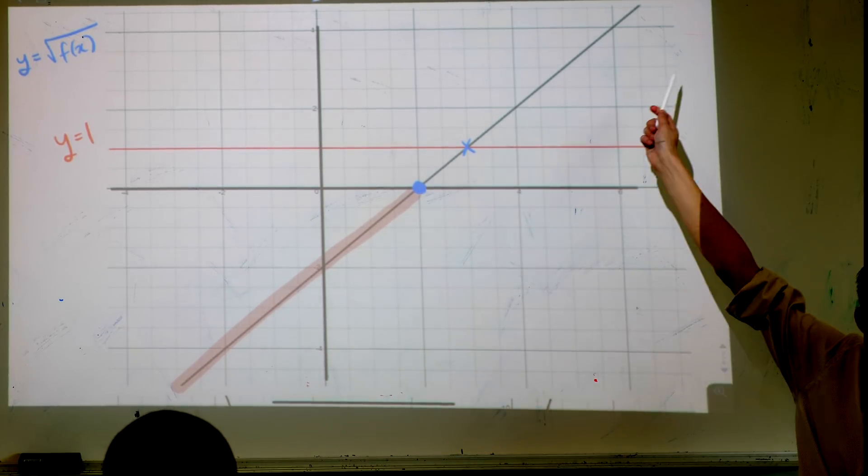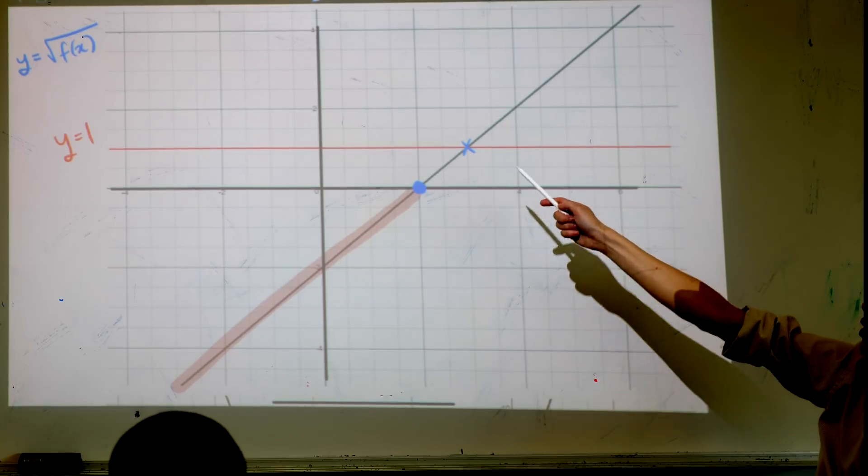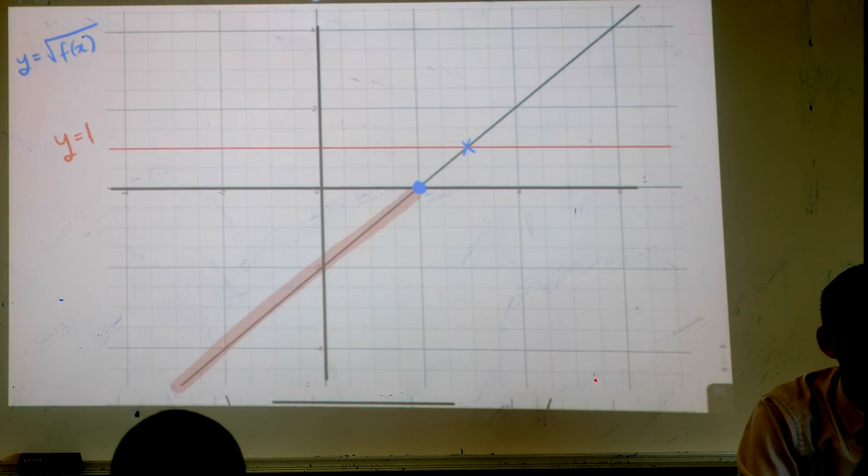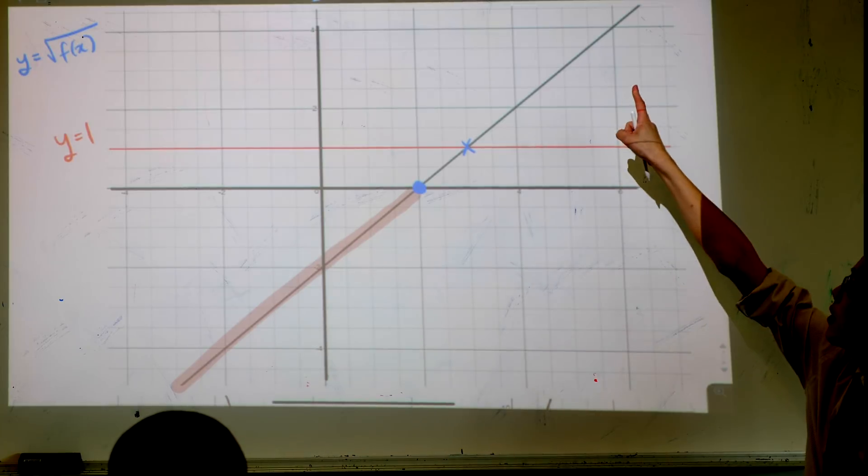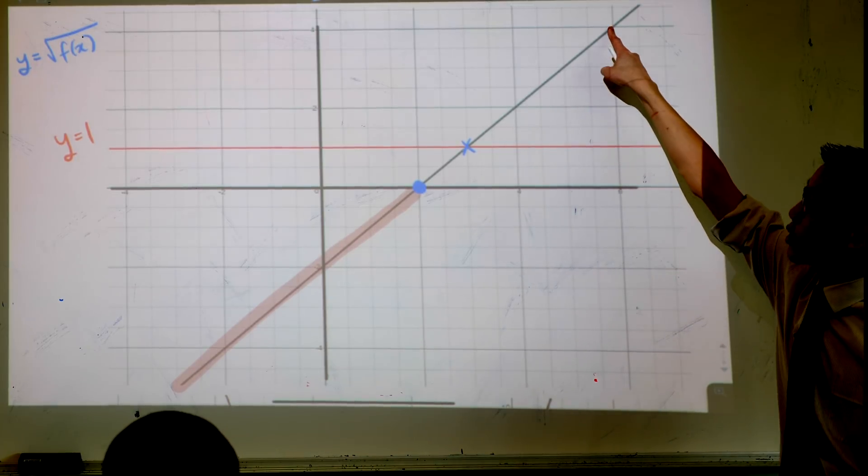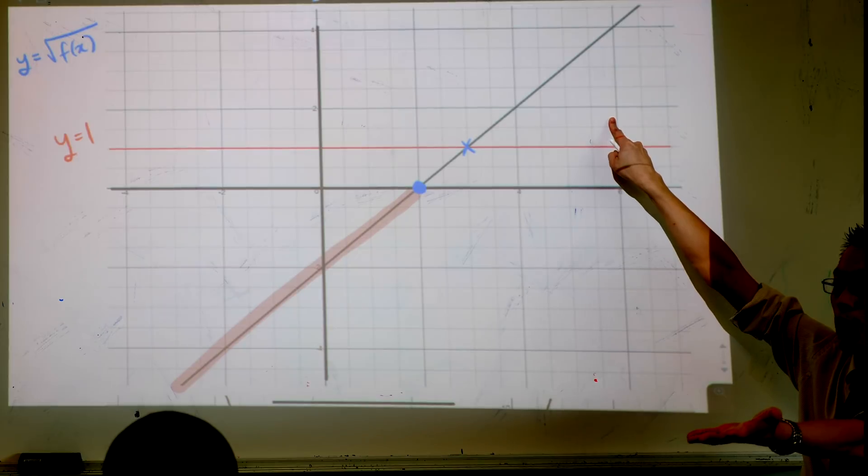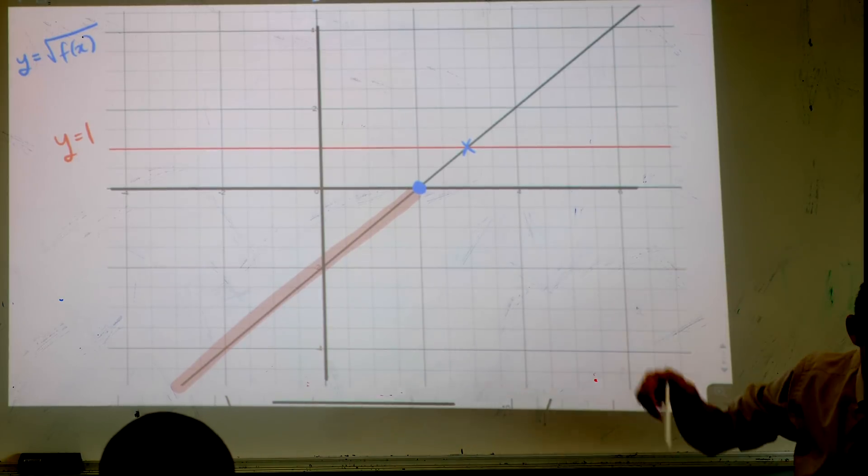So you can see 4 right at the top there. What's the x value that corresponds to y equals 4? It's 6, very good. So at x equals 6, y equals 4. When I take the square root of that, I will get 2, which should be right there. So go ahead put an x there.